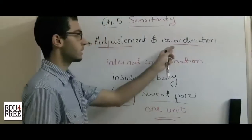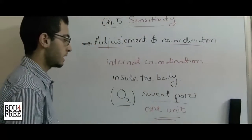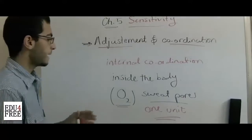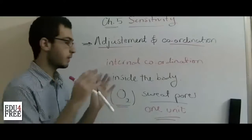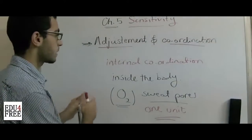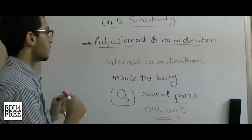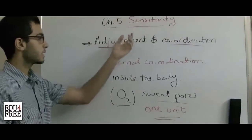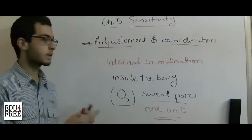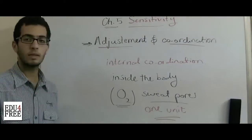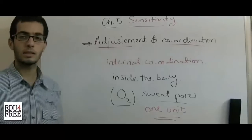This is called coordination, and it is found in all living organisms, beginning from unicellular organisms all the way to humans. So this is what sensitivity is and how it is achieved. Next time we will be talking about sensitivity in plants. Until then, thank you for watching and see you.